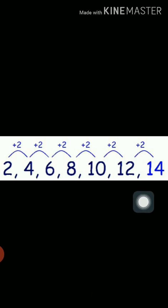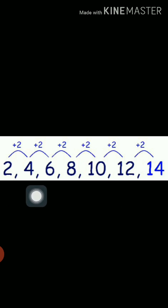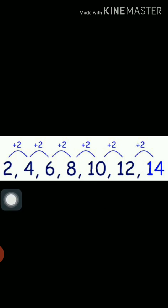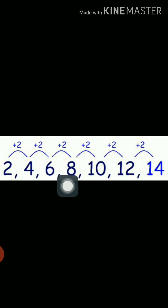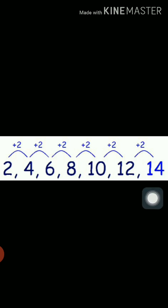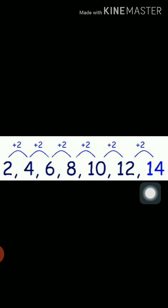A number pattern is given: 2, 4, 6, 8, 10, 12, and 14. You can see that this number pattern follows the rule that each consecutive two numbers have a difference of 2. When you add 2 to 2 you get 4, when you add 2 to 4 you get 6, when you add 2 to 6 you get 8, and similarly you get 10, 12, 14. So you also know the next number — when you add 2 to 14 you get 16, which is the next number.